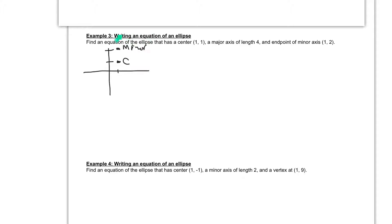So if this is the endpoint of my minor axis right here, and this is my center, the distance from the center to the endpoint of the minor axis, this length right here, is our B value. So this length from here to here, that's our B value.